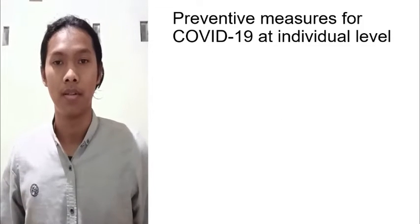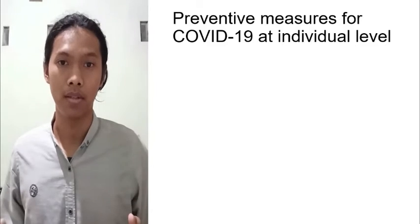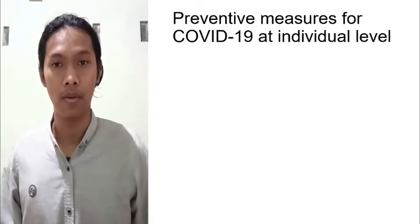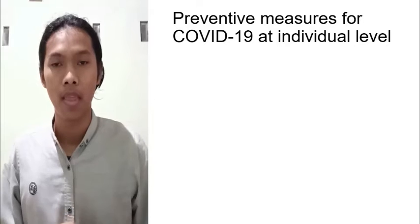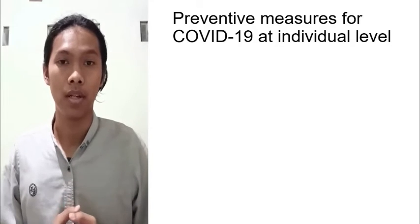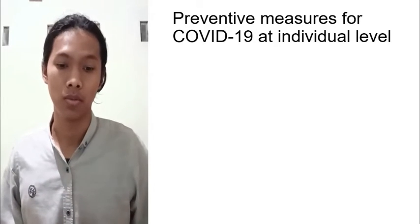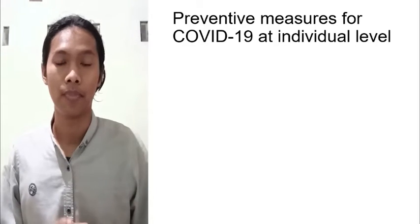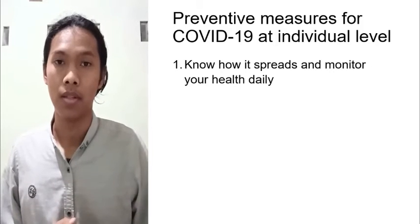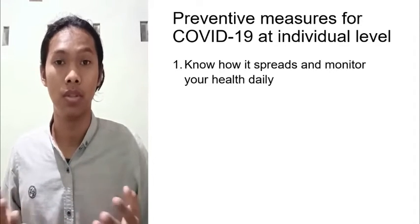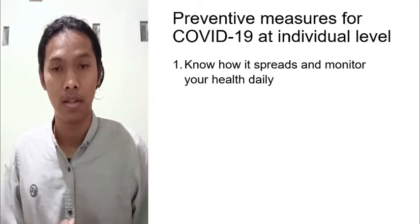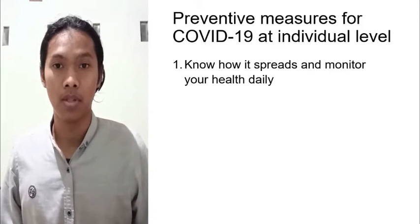I'm going to talk about how we can prevent COVID-19 in two different areas. The first one is within ourselves at the individual level, and the second one is within our family. There are actually a lot of things we can do, but I'm just going to talk about four simple methods. The first is you have to know about COVID-19 itself — by knowing how it spreads and the symptoms, you can make a strategy and behave according to the situation.